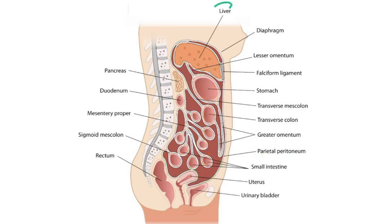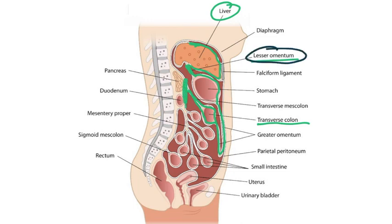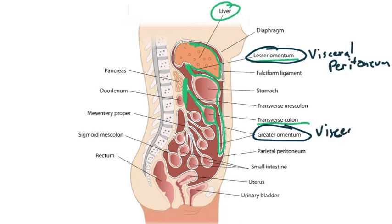Now bring your attention back to the liver. When we look at this visceral peritoneum, we can follow it down until we reach the lesser omentum. Continuing, we see it covers the stomach, then it becomes the greater omentum, which covers the colon — specifically the transverse colon — and then extends backwards to the posterior abdominal wall. We just showed the lesser omentum and the greater omentum, and since these are covering the organs, they are both visceral peritoneum.